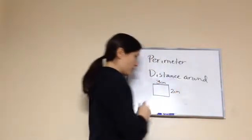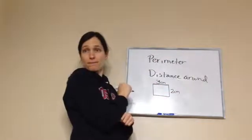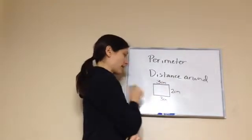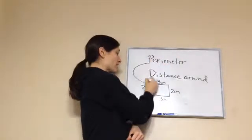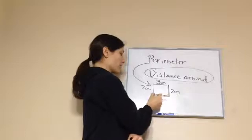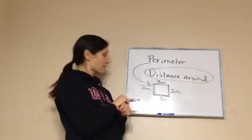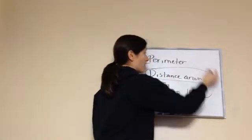For example, if this is three centimeters and this is two centimeters, if this side is three centimeters, what's this side going to be? Three centimeters, very good. And if this is two, what's this going to be? Two, very good. So the perimeter of this figure is the distance around it, so if I go three plus two plus three plus two, what would I get?